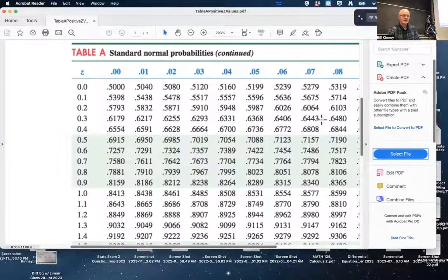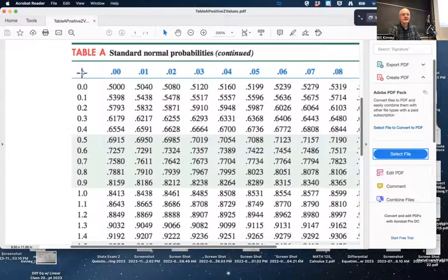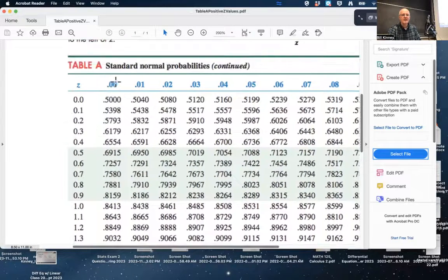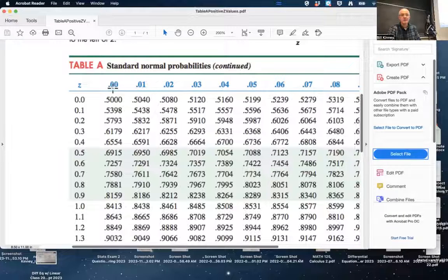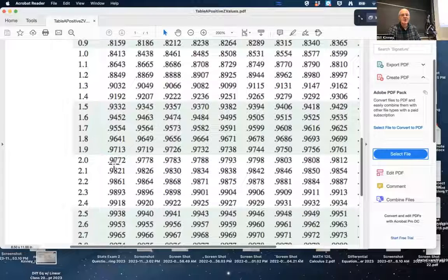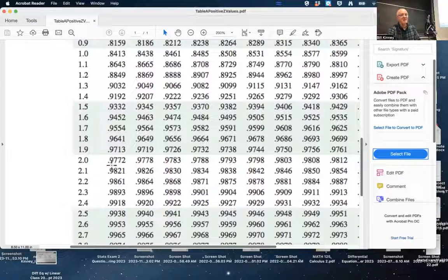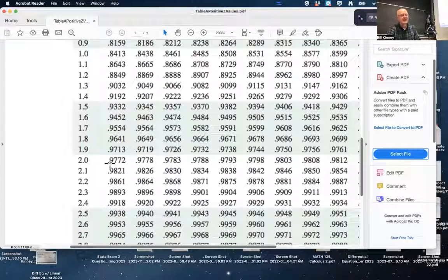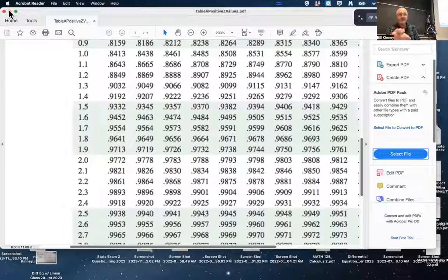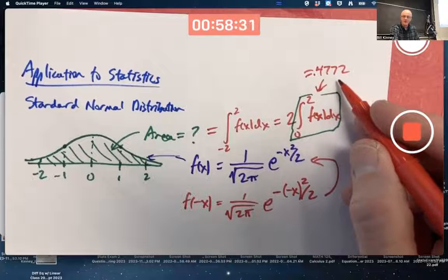We're after an upper limit of integration of 2. So, this column that says z, I first want to look for a 2.0 right there. And then I want to use the first number in the next column here because the decimal expansion I really want is 2.00. This number, this 0.9772. Okay, well, the table's a little different than I was hoping, actually. That's not the area that is between 0 and 2.